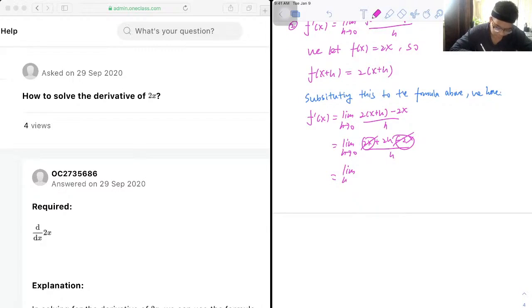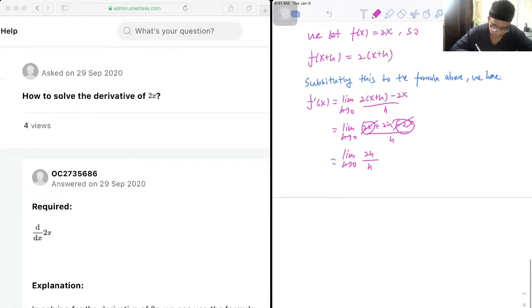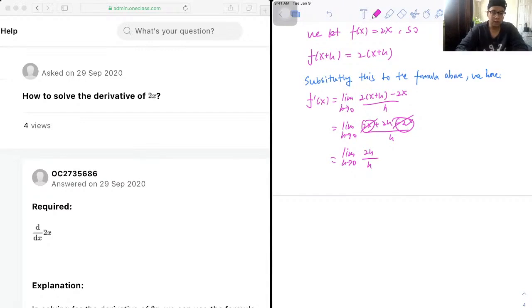Therefore, we're only left with 2h over h, and since we got h on the denominator and h on the numerator, we can cancel this out as well.